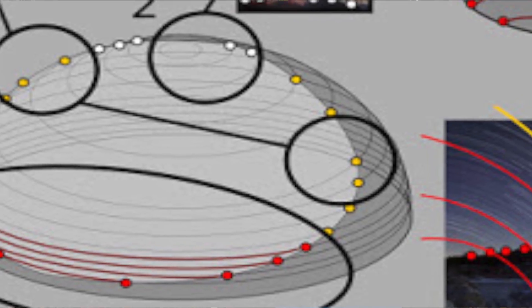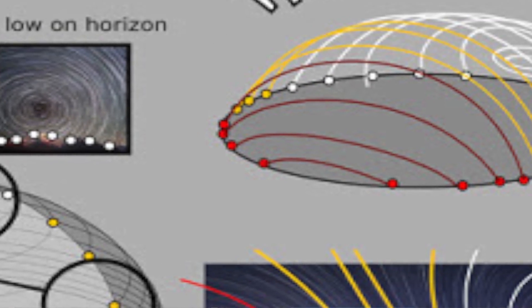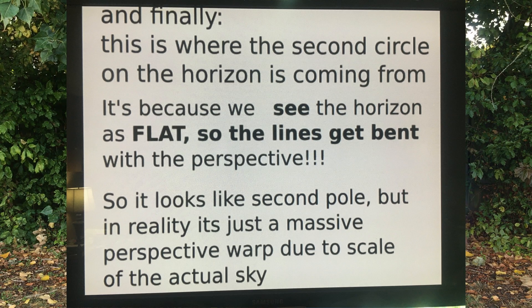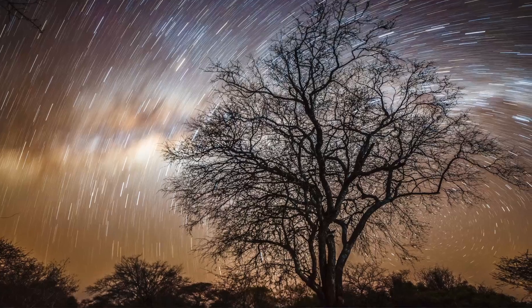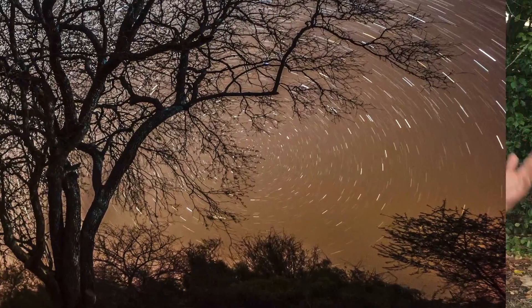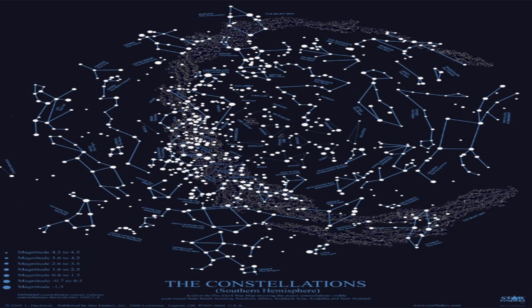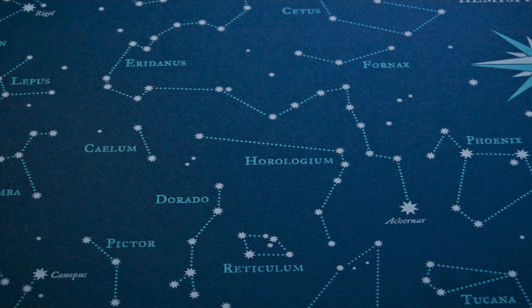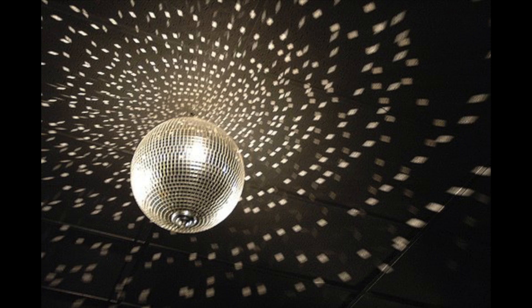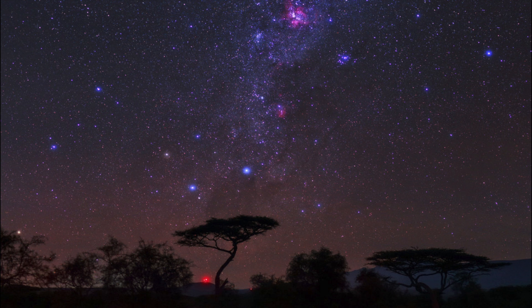Flat earthers say the stars go straight but it looks like they bend — an optical illusion. But in the southern hemisphere the stars actually spin completely around, so now they're saying it looks like it spins but it's really going flat — perspective and optical illusion again. All the stars in the southern hemisphere have their own names and their own constellations; nothing is a mirror image. You have a completely different sky in the southern hemisphere than in the northern hemisphere. This is not reasonable.